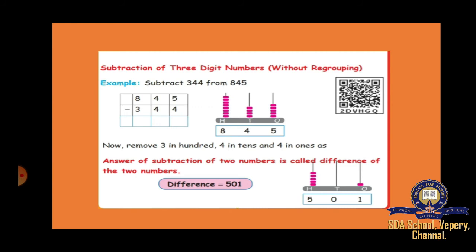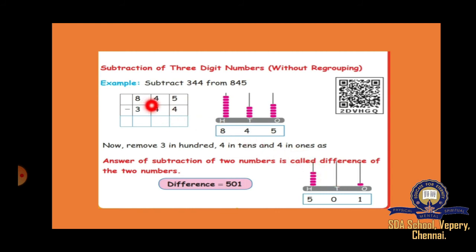Next, subtraction. For example, subtract 344 from 845, which is 845 minus 344. Ones place: 5 minus 4 equals 1. Tens place: 4 minus 4 equals 0. Hundreds place: 8 minus 3 equals 5. The answer is 501.